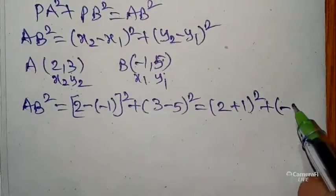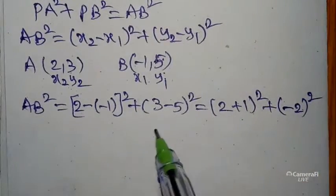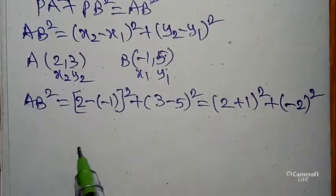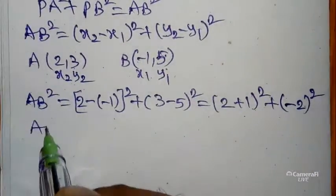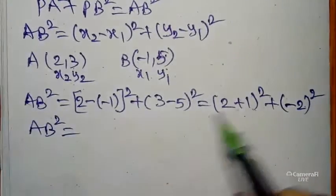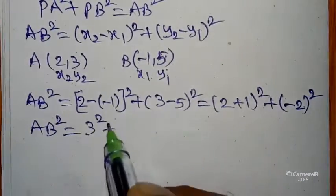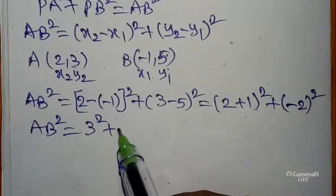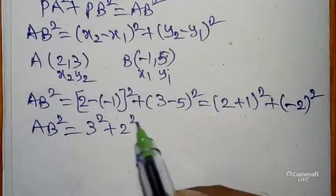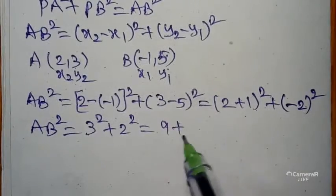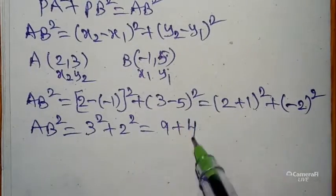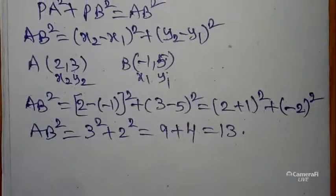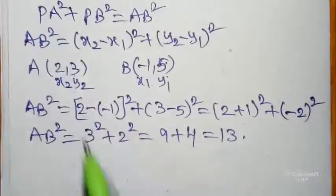So AB² = (3)² + (−2)² = 9 + 4 = 13. Now we can find PA² and PB² individually.